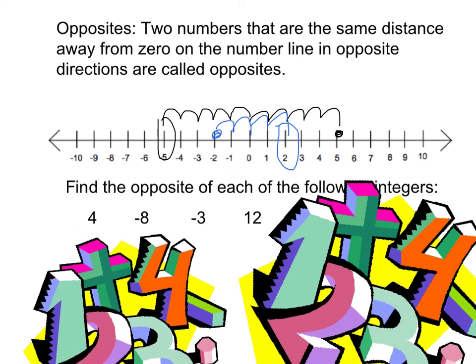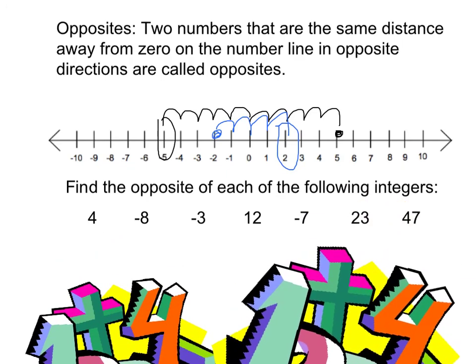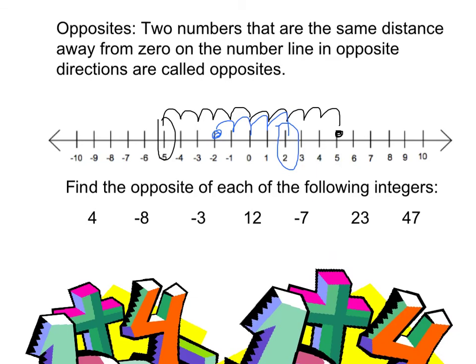Please pause the video, write down the next example in your notes, and try to find the opposite of each of the following numbers. The opposite of 4 is negative 4. The opposite of a positive number will always be negative — please record that statement. The opposite of negative 8 is positive 8. The opposite of a negative number is always positive. The opposite of negative 3 is positive 3. The opposite of 12 is negative 12. The opposite of negative 7 is positive 7.